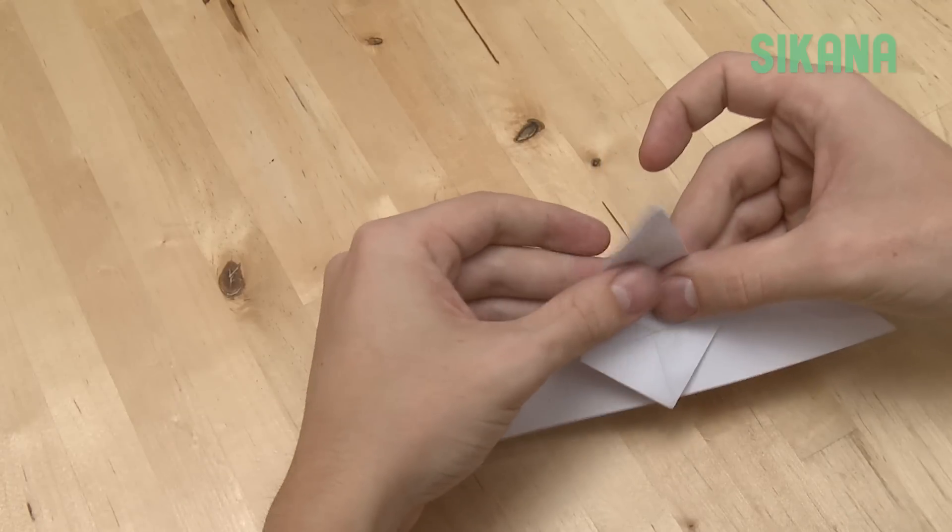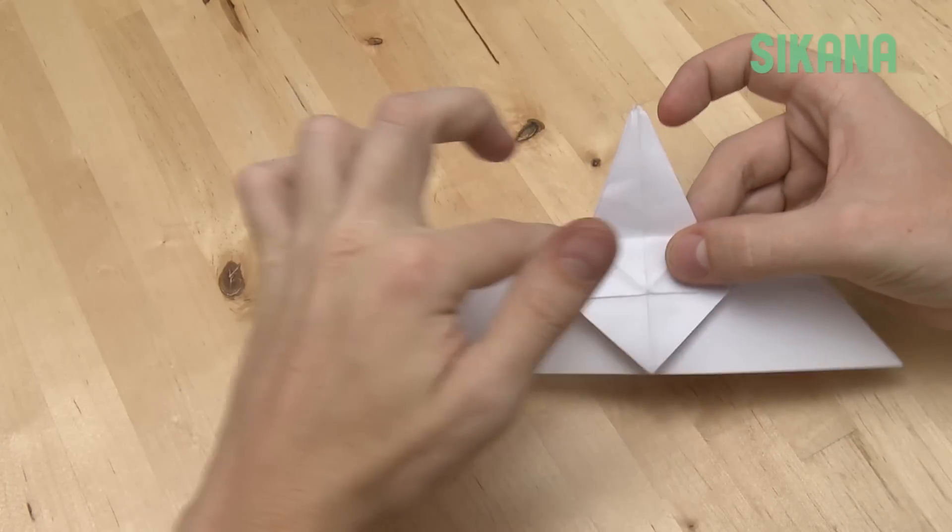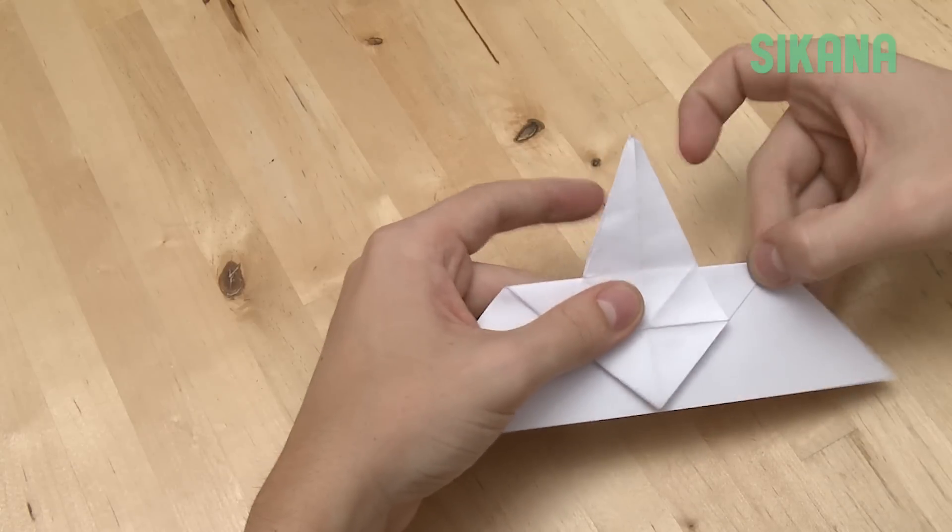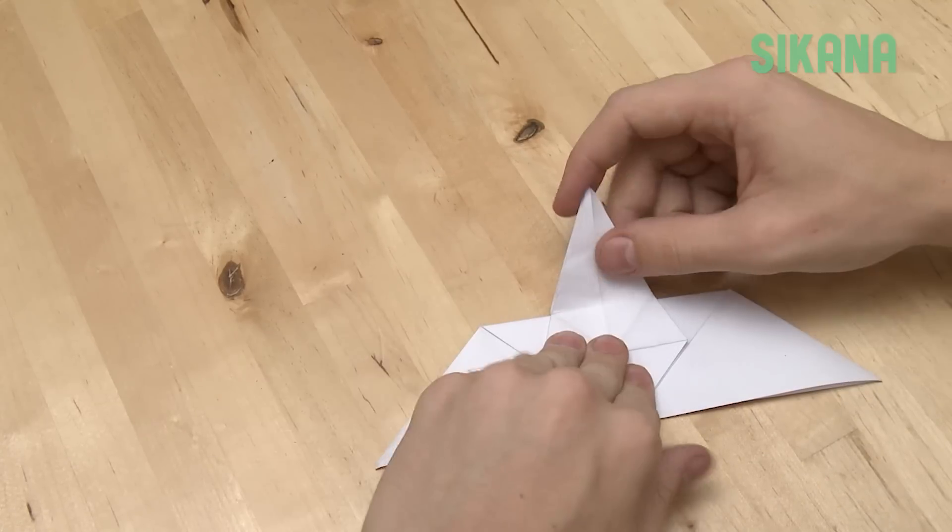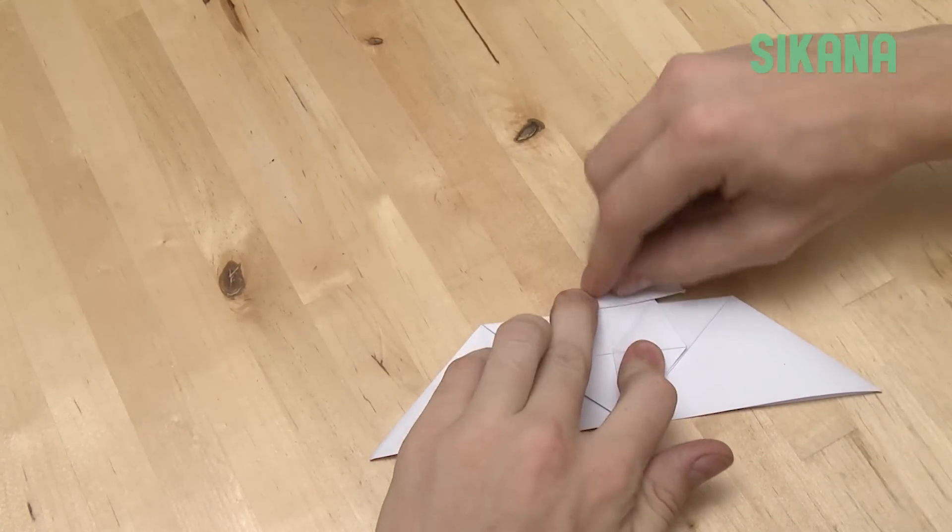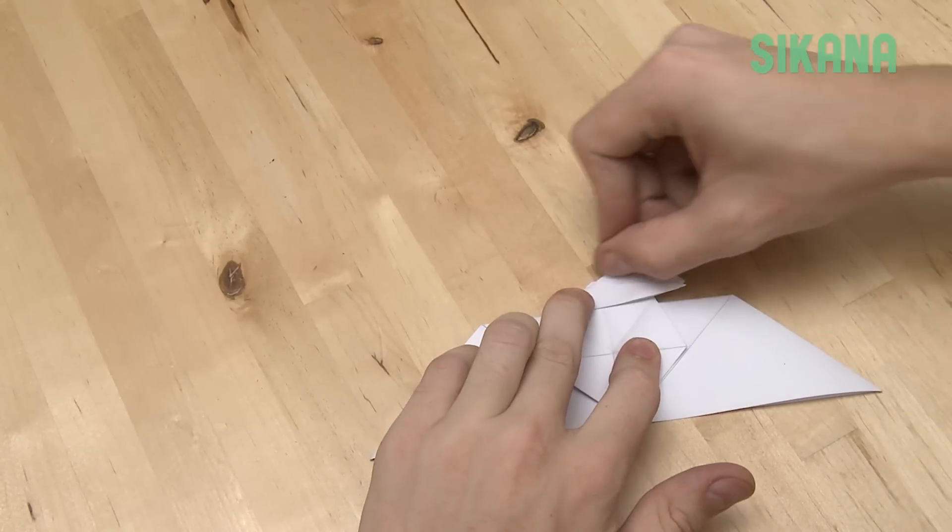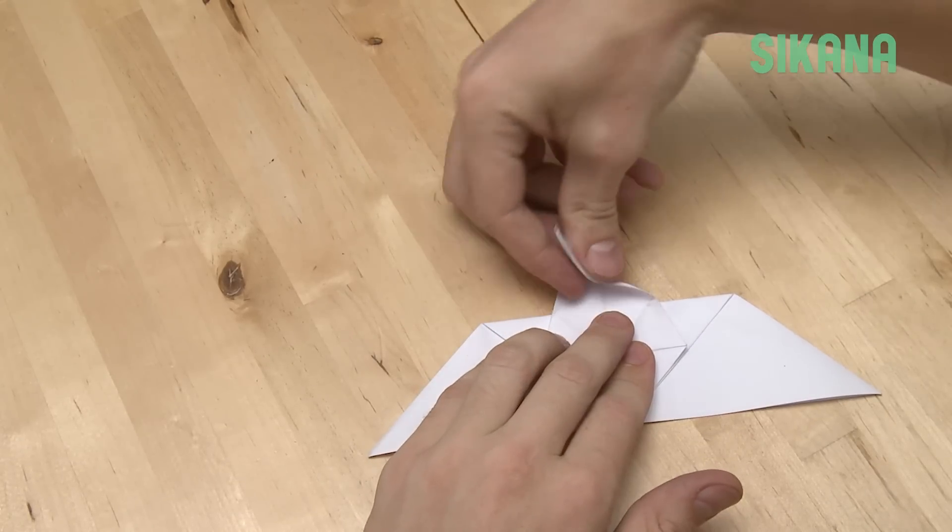Then fold the top of the triangle as much as possible. Now we will create the head. Fold this part like this, along this line. Repeat in the other direction.